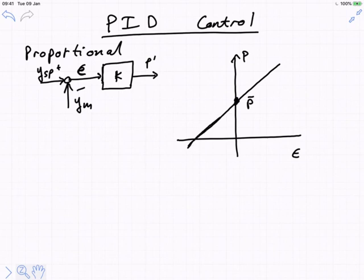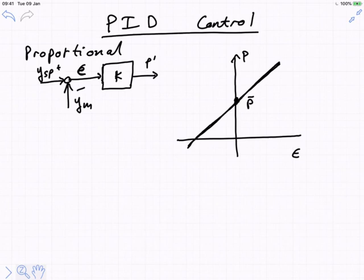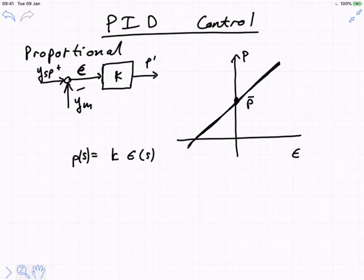This is how the controller works. In our analysis we will always be analyzing these linear systems in deviation variable form, so mathematically we write P(s) = K · ε(s) — that's what we write down for the gain. An epsilon of zero would correspond to a P of zero in deviation variables.